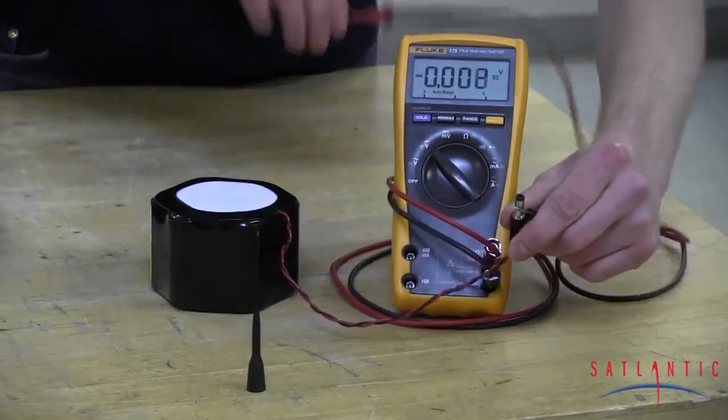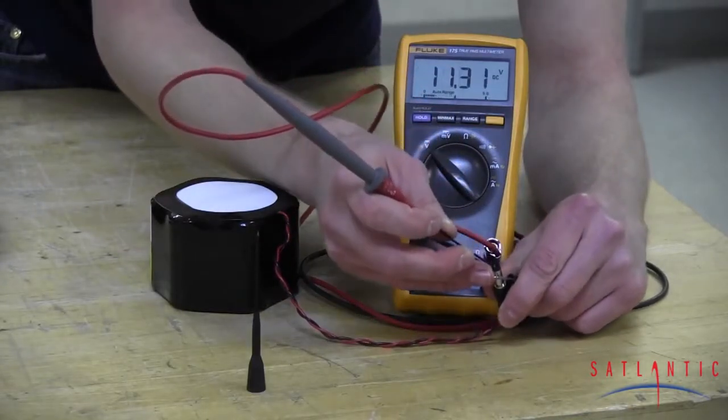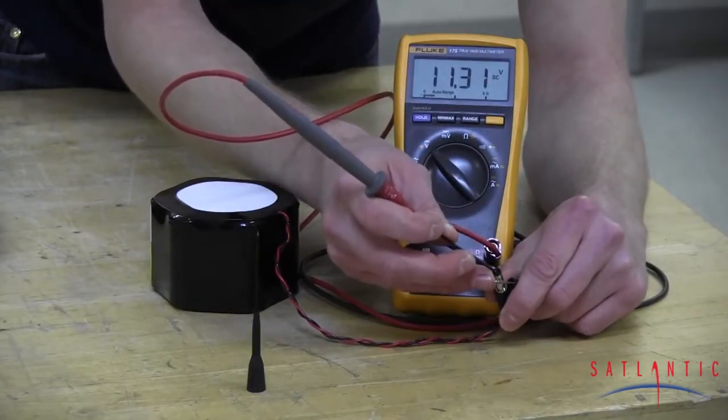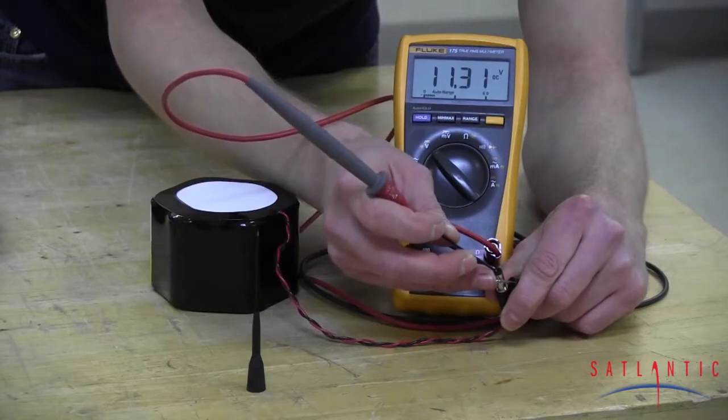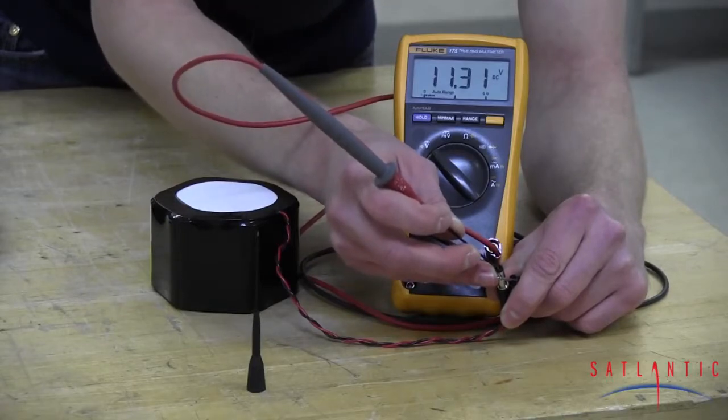Your red lead is going to go into the center. I measured this at 11.31 volts, and that looks pretty good for a fresh battery. So we're going to go ahead and install this.